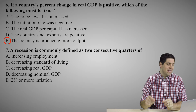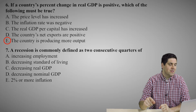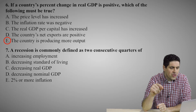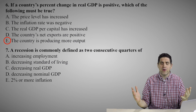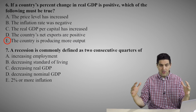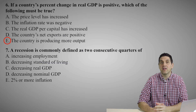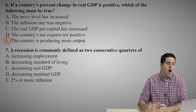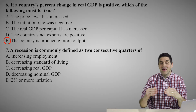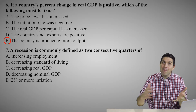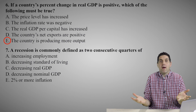For question number six, the right answer is E — the country is producing more output. Remember, if real GDP increases, it means we're actually producing more stuff, not just that the price level is going up. If real GDP goes up, prices might have actually fallen slightly. So not A — the inflation rate was negative; it has nothing to do with deflation. Real GDP per capita — we don't know because we have no information on population. And D — the country's net exports are positive — we don't know anything about trade. The right answer is E.